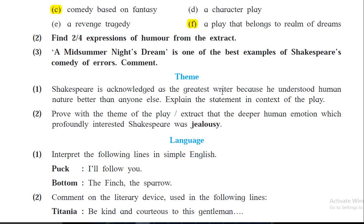Shakespeare is acknowledged as the greatest writer because he understood human nature better than anyone else. We can say this because, though the theme of this story is love, we can also see other human feelings like jealousy — Oberon is jealous of his wife's affection for the Indian boy, and Hermia becomes jealous of Helena when she realizes that both Demetrius and Lysander now love Helena instead of her. The human characters are very nicely portrayed in this story.